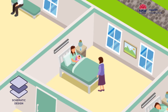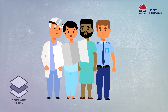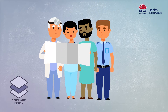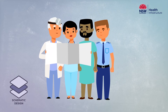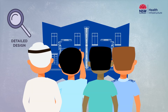Schematic design provides the next level of detail, such as how rooms and services relate to each other and how patients and staff flow through the facility. Once schematic design is complete and reviewed by the project user groups, the redevelopment moves into the detailed design phase.